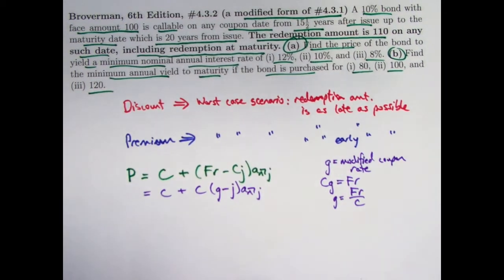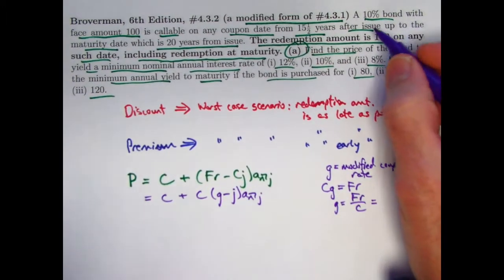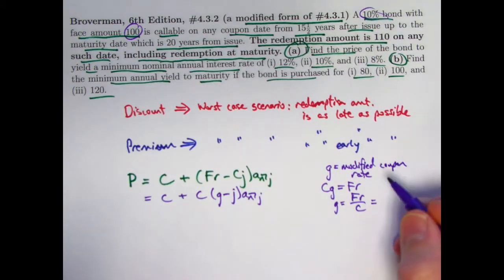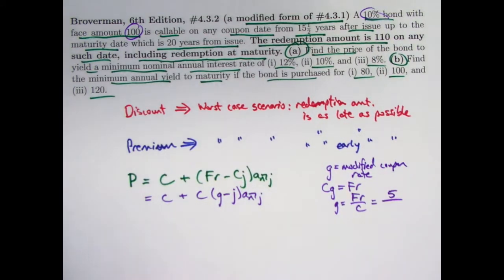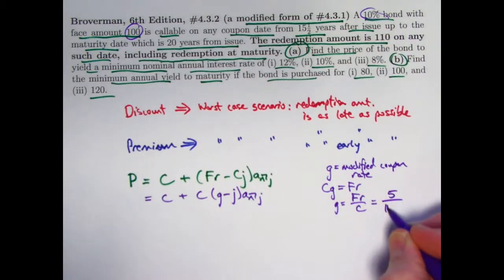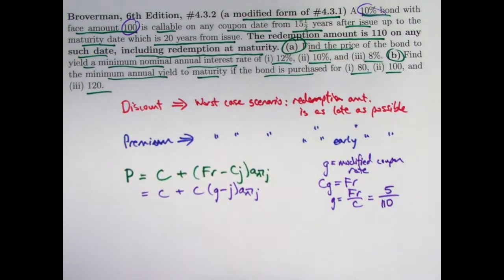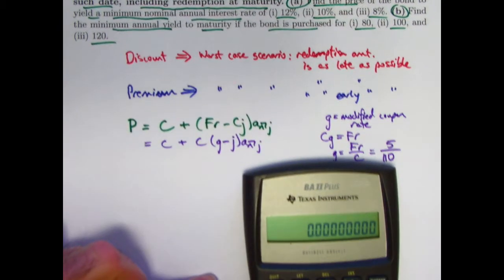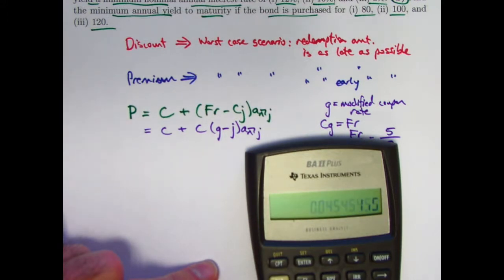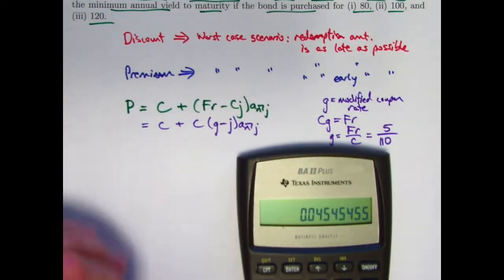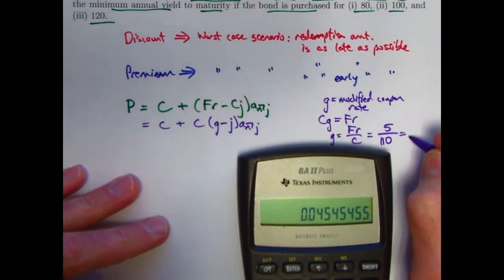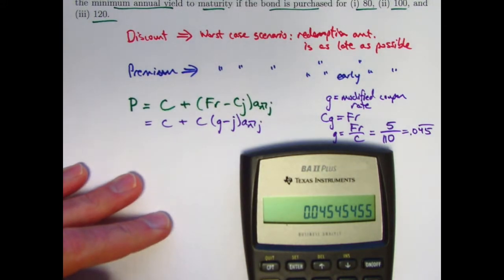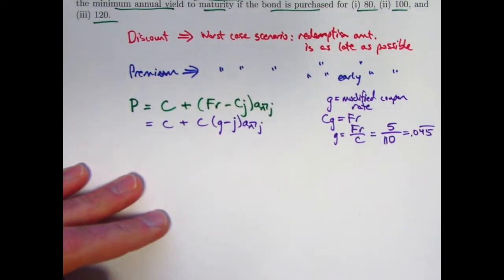And for this particular problem, the modified coupon rate would be f times r, f is 100, r is half of 10%, 5%, so f times r is going to be 5. And c, the redemption amount is 110. 5 divided by 110, which would be 1/22nd, is the modified coupon rate. And that is going to be 0.045 repeating. I'll go ahead and store that in register 0.